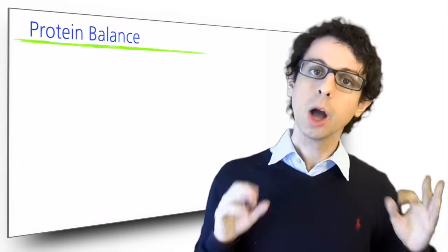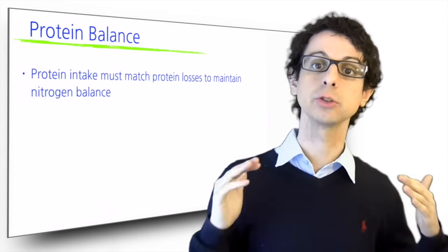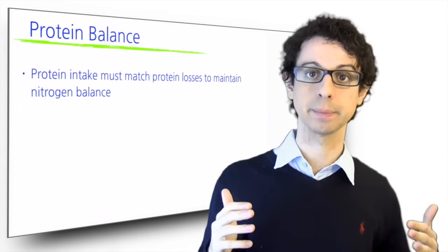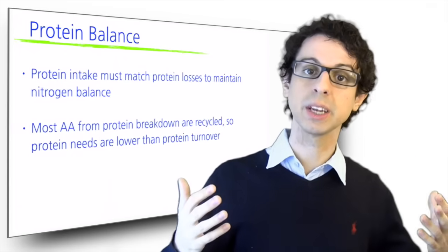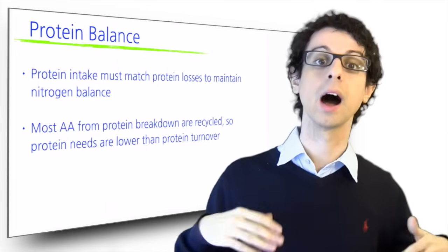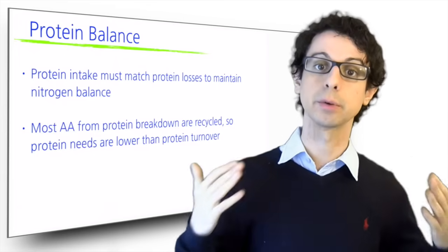So how much protein do we need? We already know that our protein turnover is very high, about 250 grams per day. But that doesn't mean we have to get all of those proteins from food, because most amino acids from protein breakdown are recycled, so protein dietary needs are much lower than protein turnover.